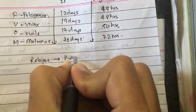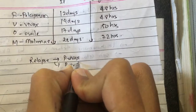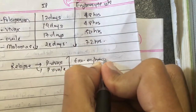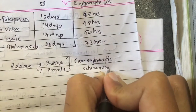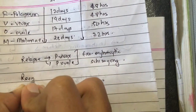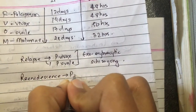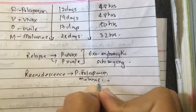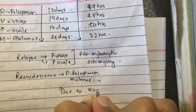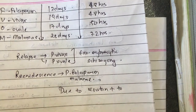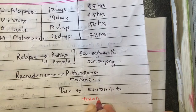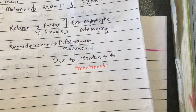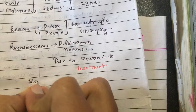Relapse occurs in Plasmodium vivax and Plasmodium ovale due to the exo-erythrocytic stage. Recurrence occurs in Plasmodium falciparum and Plasmodium malariae, and it is due to resistance to treatment.